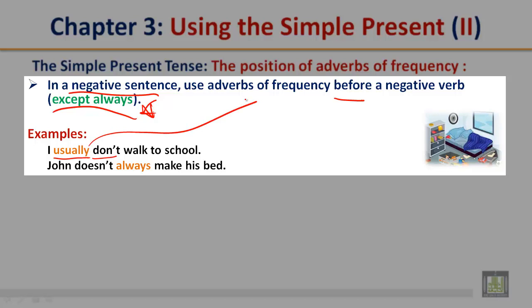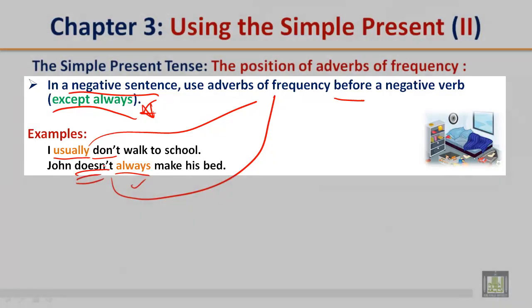John doesn't always make his bed. The negative verb 'doesn't' is before the adverb of frequency 'always'. Looking back at the rule — in a negative sentence, use adverbs of frequency before a negative verb except 'always' — that means when using 'always', it goes after the negative verb.